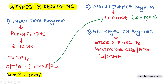The anti-rejection regimen involves steroid pulse therapy, for example methylprednisolone. If the patient is not tolerating or not responding to steroid pulse therapy, alternatives include muromonab-CD3, antithymocyte globulin, tacrolimus, sirolimus, or mycophenolate mofetil.